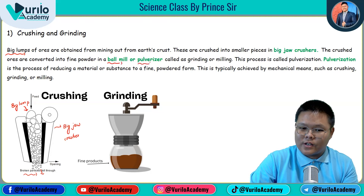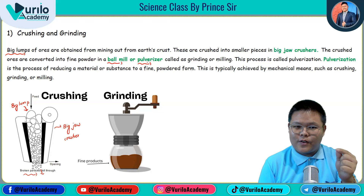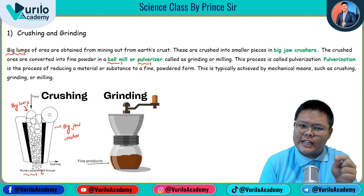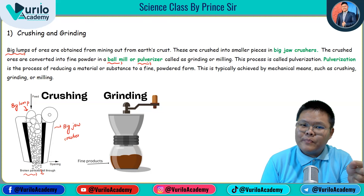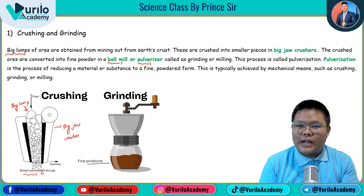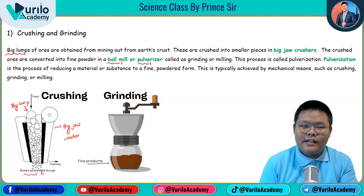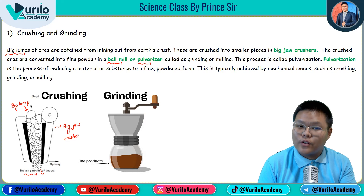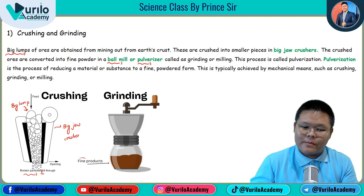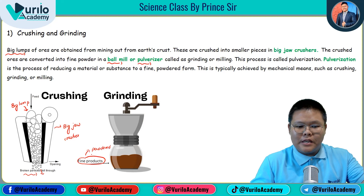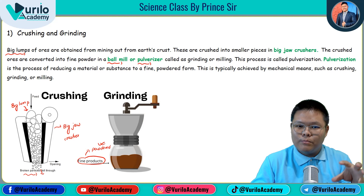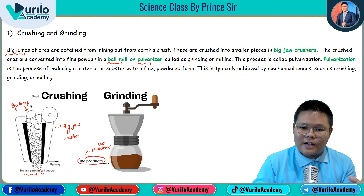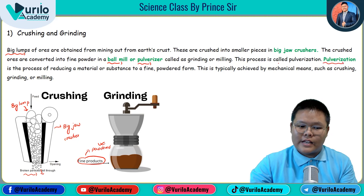You can use a ball mill and a pulverizer to make an even smaller, powder form. This fine product has a cake form and a powder form. This process is called crushing or grinding, and the entire process of reducing ore to powder form is called pulverization.